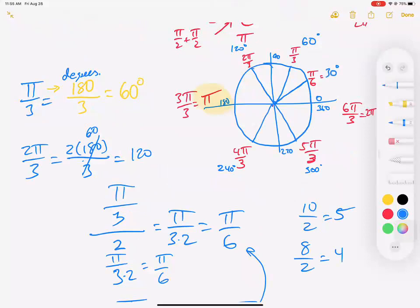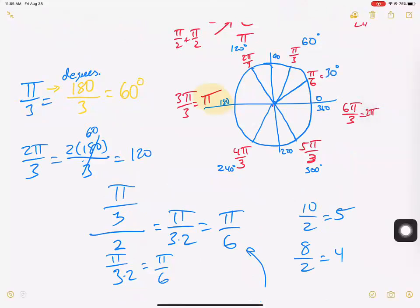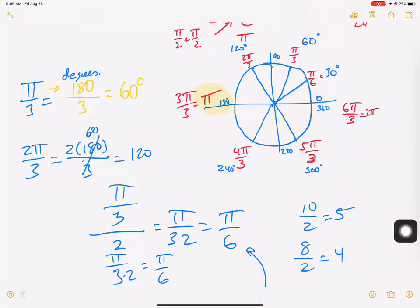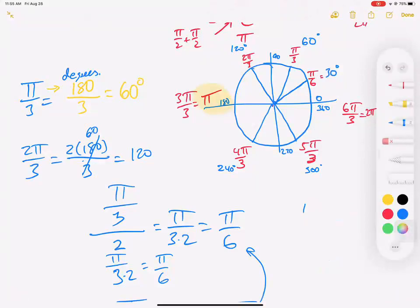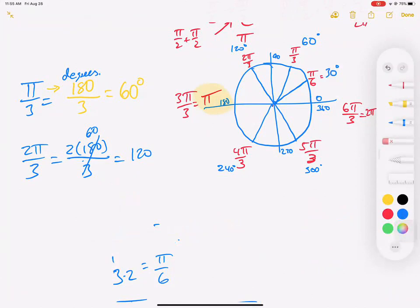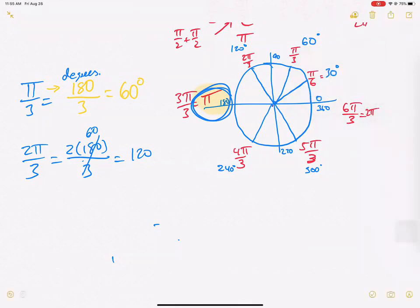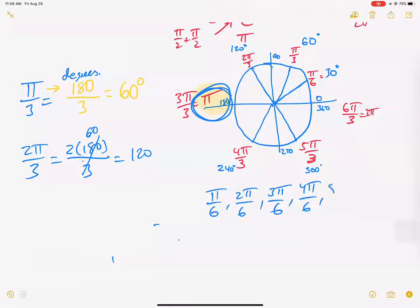Now let's walk around the circle counting by pi over six, which is 30-degree steps. The sequence is: pi over six, two pi over six, three pi over six, four pi over six, five pi over six, six pi over six. Most of these reduce — two pi over six becomes pi over three, three becomes pi over two, four becomes two pi over three, and six pi over six is just pi.